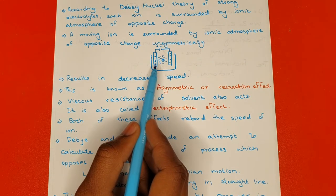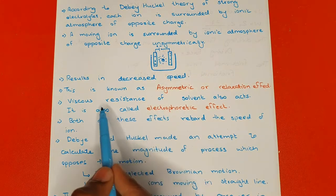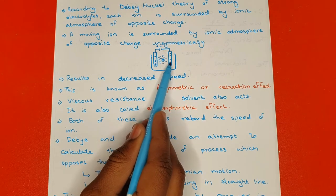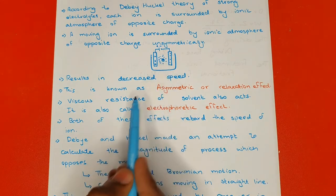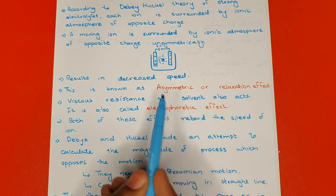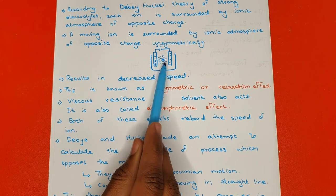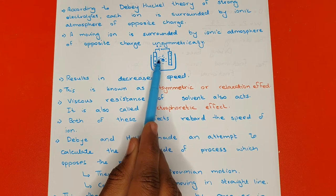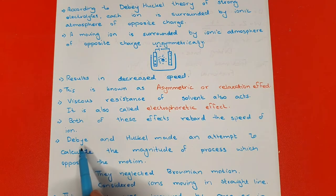Another effect is that the viscous resistance of the solvent also acts. When our electrolyte is dissolved in water, the positive charge moving towards the negative electrode will face viscous resistance from the solvent — colliding with solvent molecules — which decreases its movement. This is known as the electrophoretic effect.